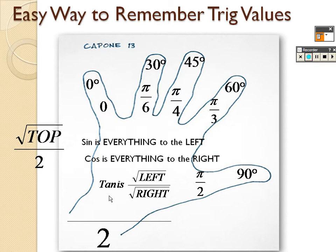For tangent, you do the square root of the left finger count over the square root of the right finger count. For tangent of 30 degrees, put your ring finger down. There is 1 finger to the left, and 3 fingers to the right. So it's √1 over √3, which is 1 over √3. Since you can't have a square root in the denominator, multiply top and bottom by √3 to get √3 over 3 as your exact answer.